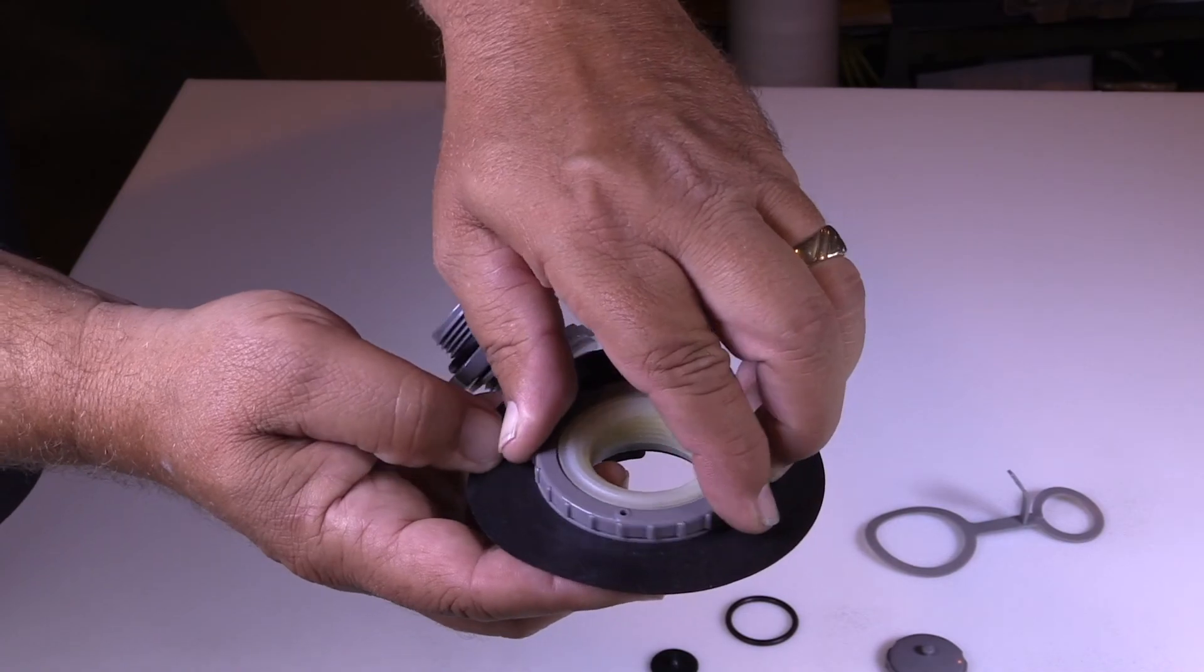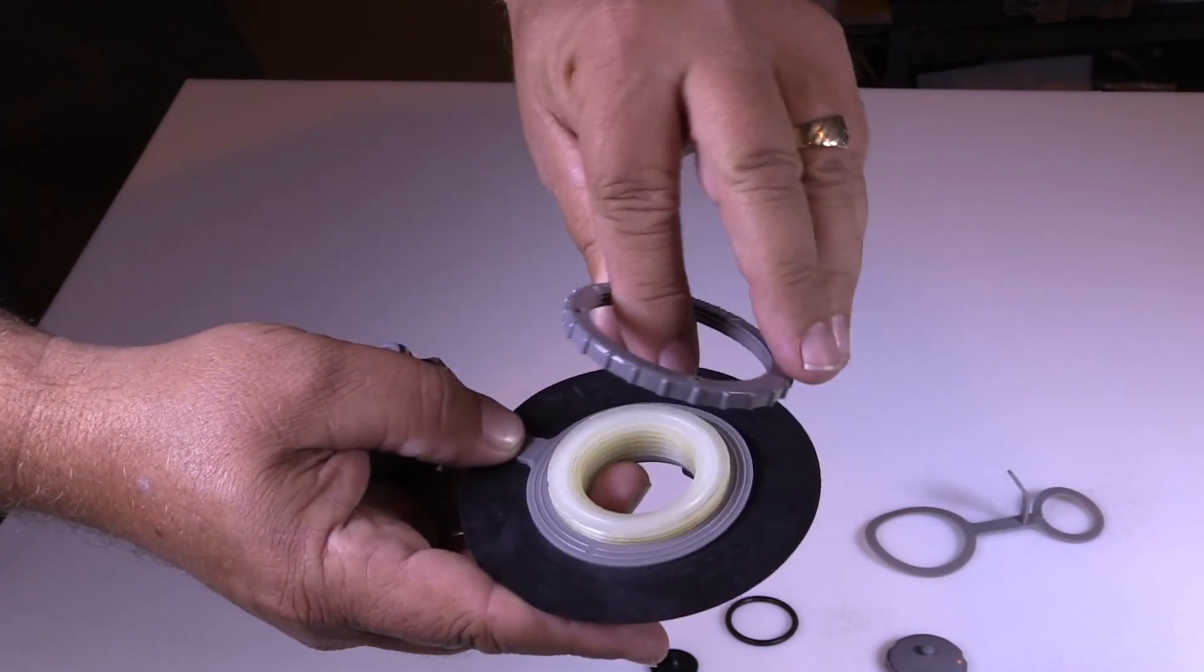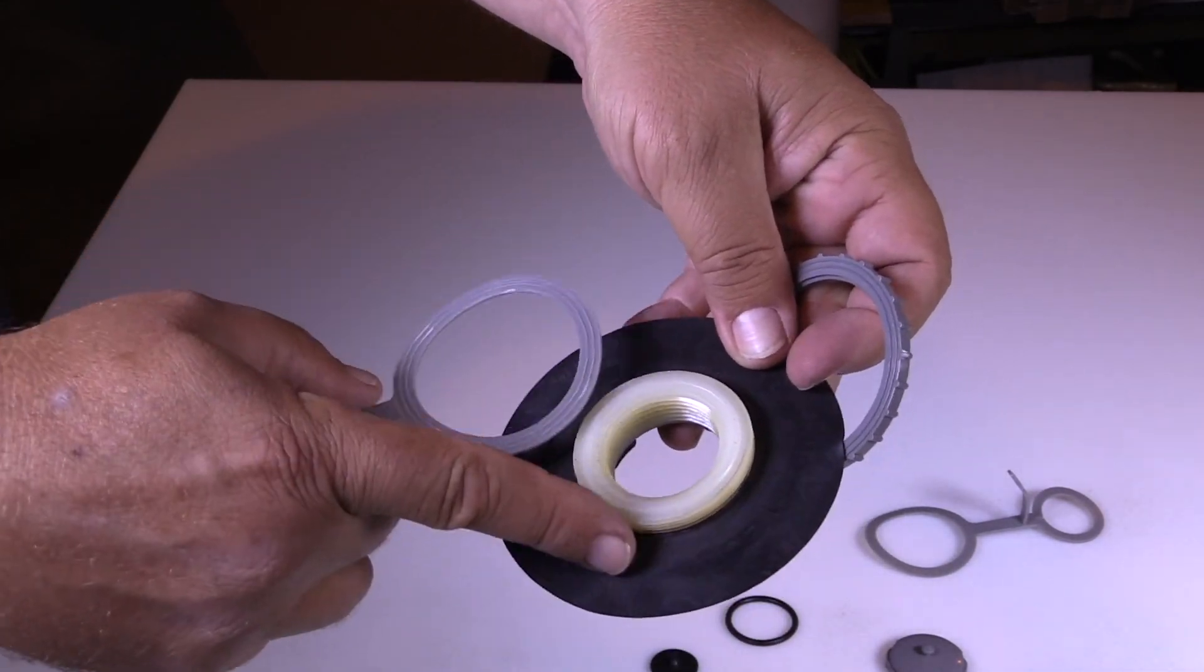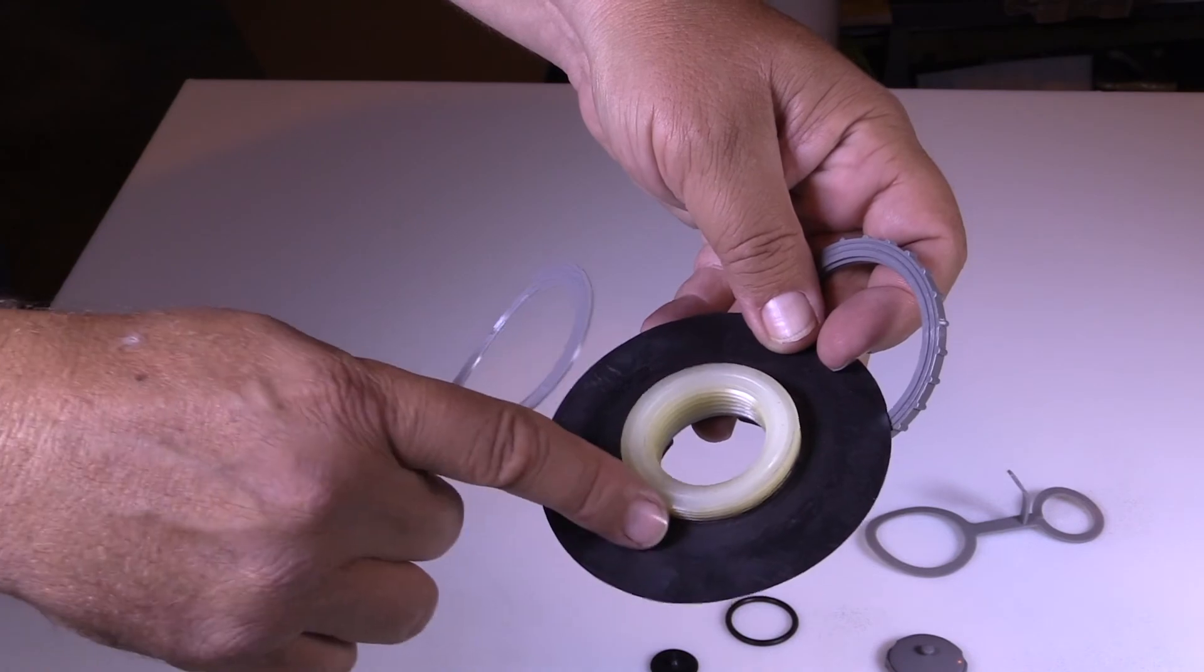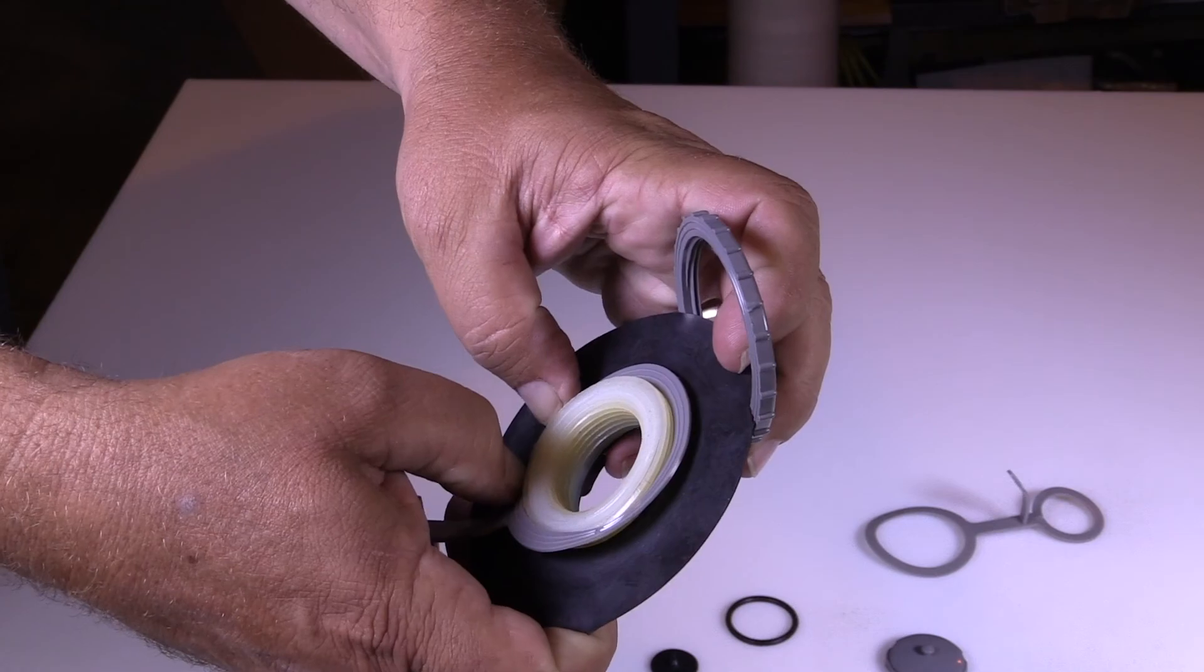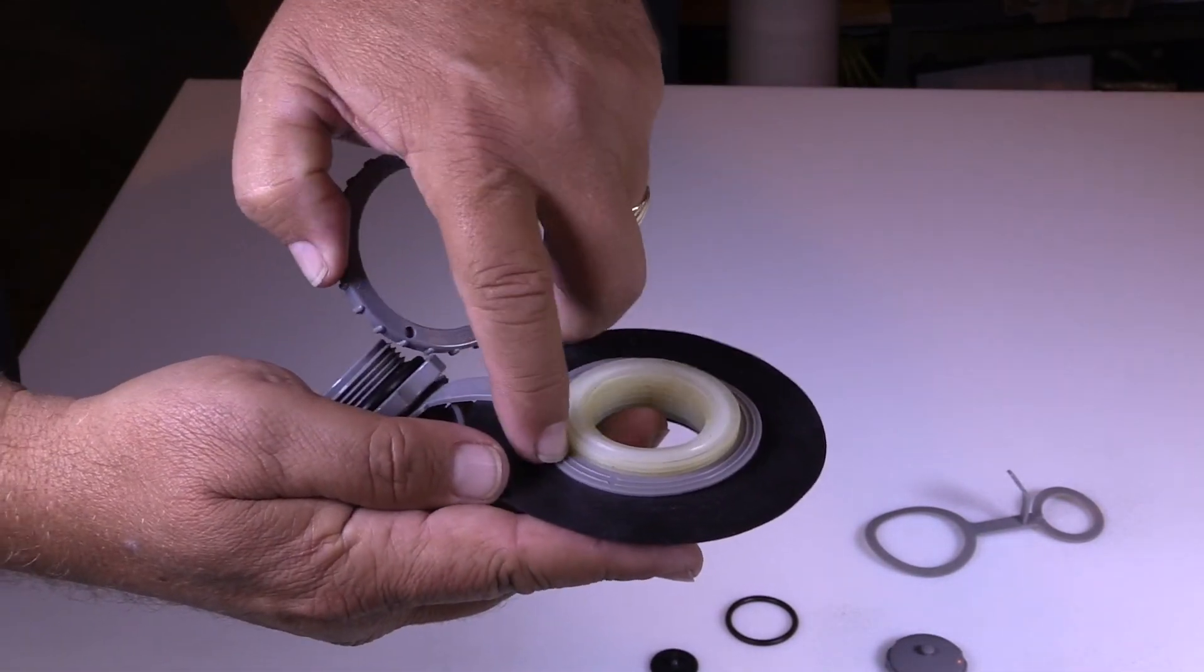The strap also works as a gasket between the casing ring and the valve base itself. So it creates a gasket which can seep air there also. So you want to make sure that you have the strap in place and it's not cracked.